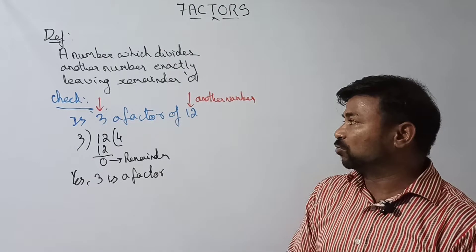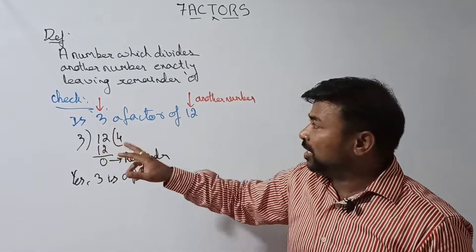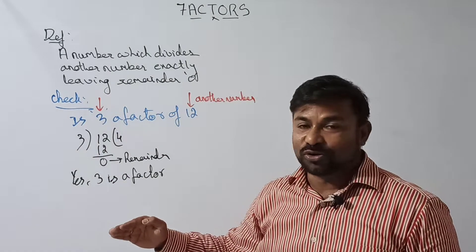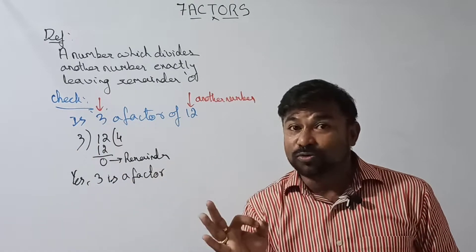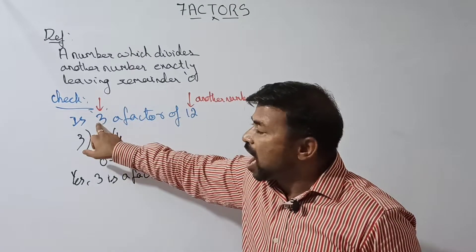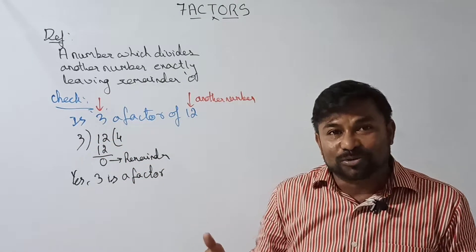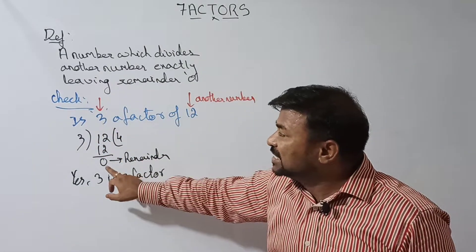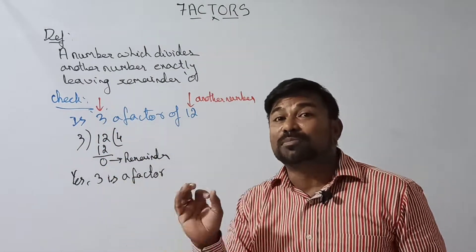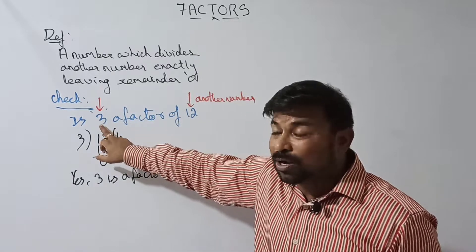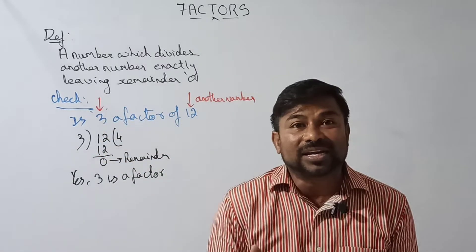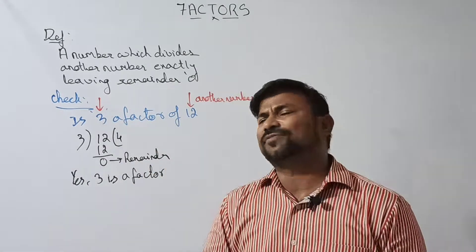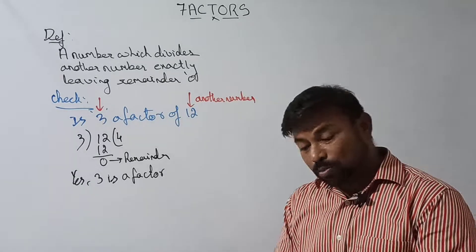In simple terms: when one number exactly divides another number and the remainder is zero, we say that number is a factor of the other. So when it is dividing exactly, then we can say yes, it is a factor.